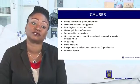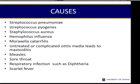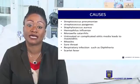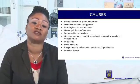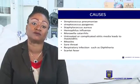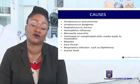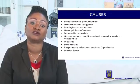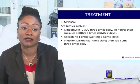The causes: many organisms may cause mastoiditis, including Streptococcus pneumoniae, Streptococcus pyogenes, Staphylococcus aureus, Haemophilus influenzae, and Moraxella catarrhalis, as well as untreated or complicated otitis media. The predisposing causes include untreated or complicated otitis media, measles, sore throat, respiratory infections such as diphtheria, and scarlet fever. Apart from the organisms, in untreated or complicated otitis and other conditions, patients may end up having mastoiditis, or the mastoid may be affected.